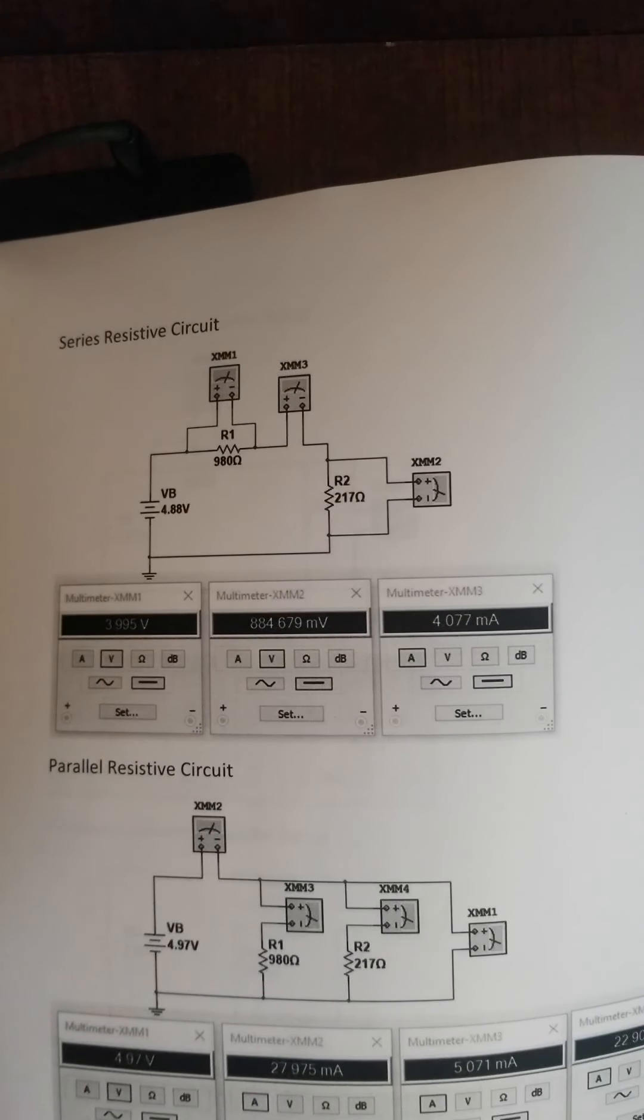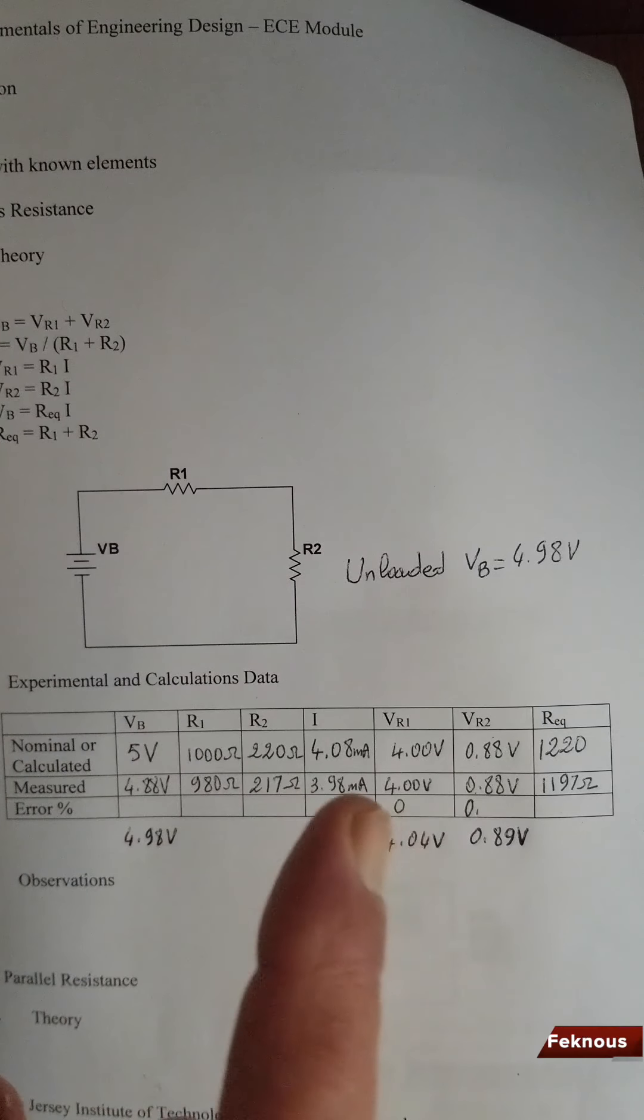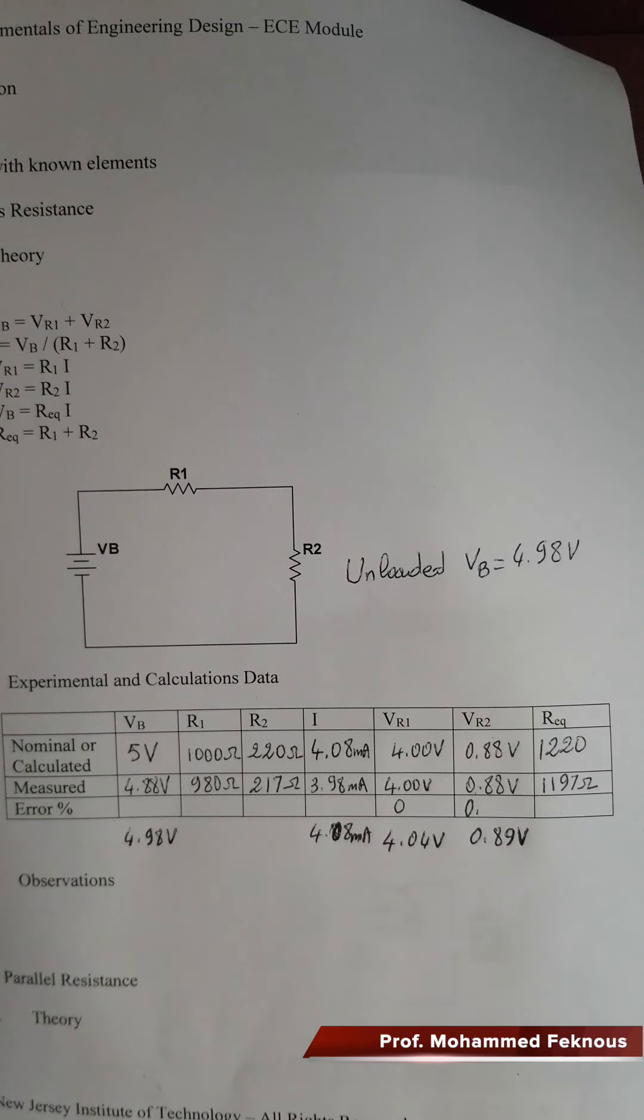You decide, you make a choice. So you decide which set of numbers you want to use in the calculations. Just remember that in the calculations you have to use the values that were measured. For example, the VB that you use to obtain the calculation of current has to be whatever the measured value is. R1 and R2, same thing. Use the 980 and 217. And the reason we do that is because we want you to be very close to what the measured values would be, instead of just having nominal values in general.